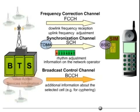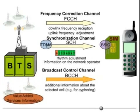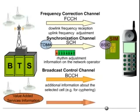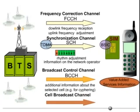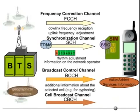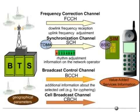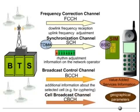For some value-added services, for example, location-dependent services, additional information has to be transmitted from the BTS to the mobile. The cell broadcast channel, CBCH, is used for this purpose to transmit geographical parameters, for example, the Gauss-Kruger coordinates of the BTS, to the mobile.